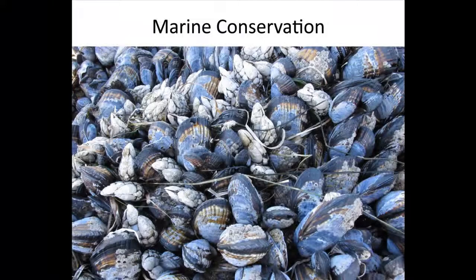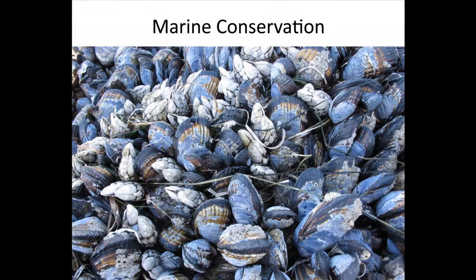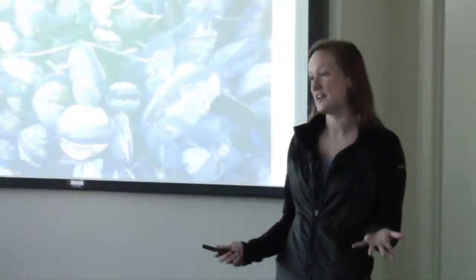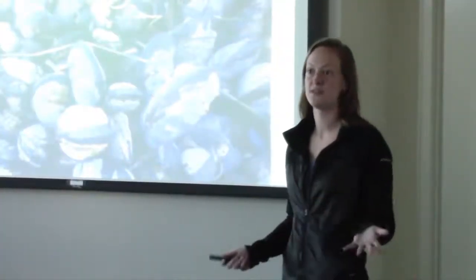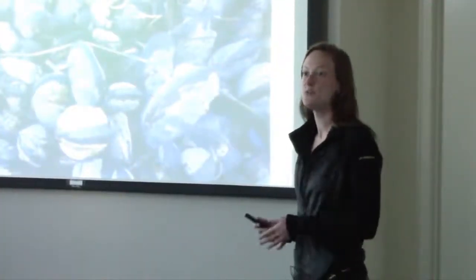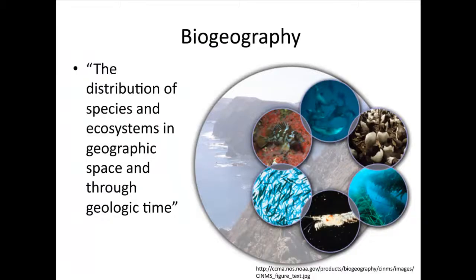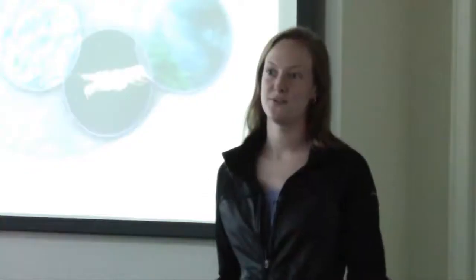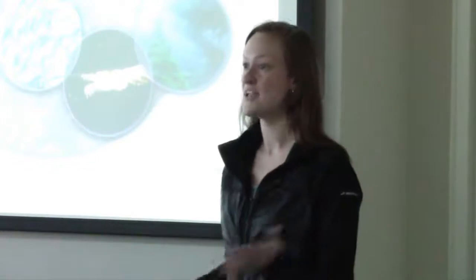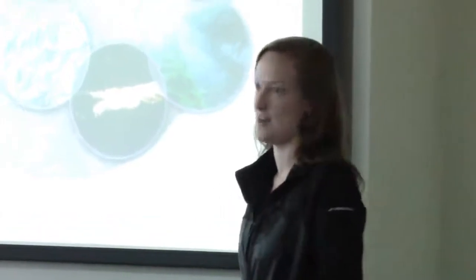Marine conservationists really struggle with the placement of marine protected areas because we don't understand how marine organisms interact with their environment. We don't understand their biogeography. Biogeography is the distribution of species and ecosystems in geographic space and through geologic time — so how do these organisms respond to their environment, and where are the most species found in an area?